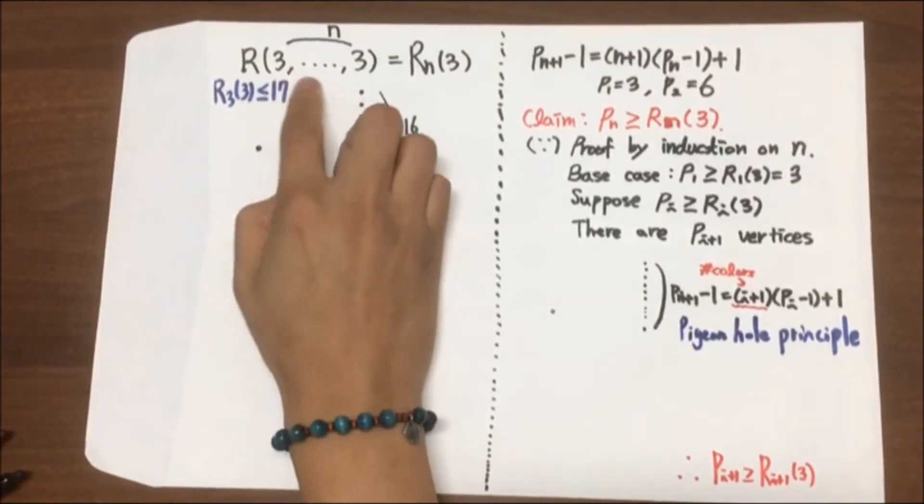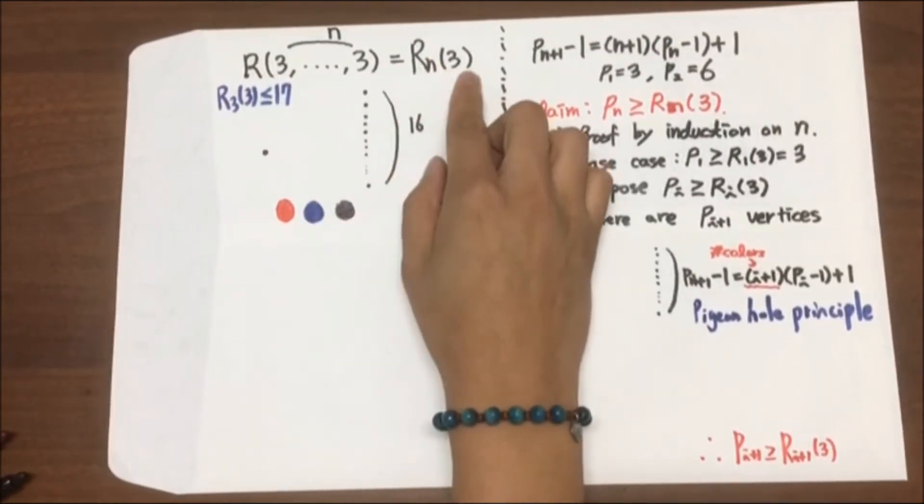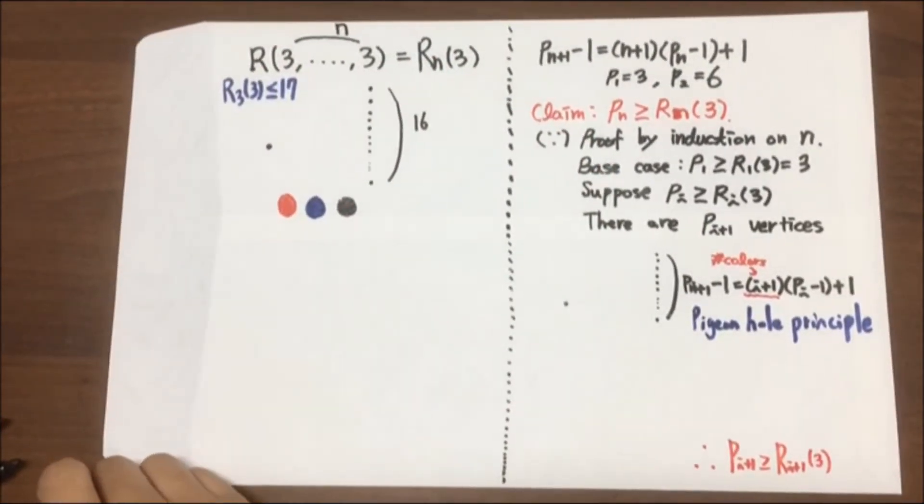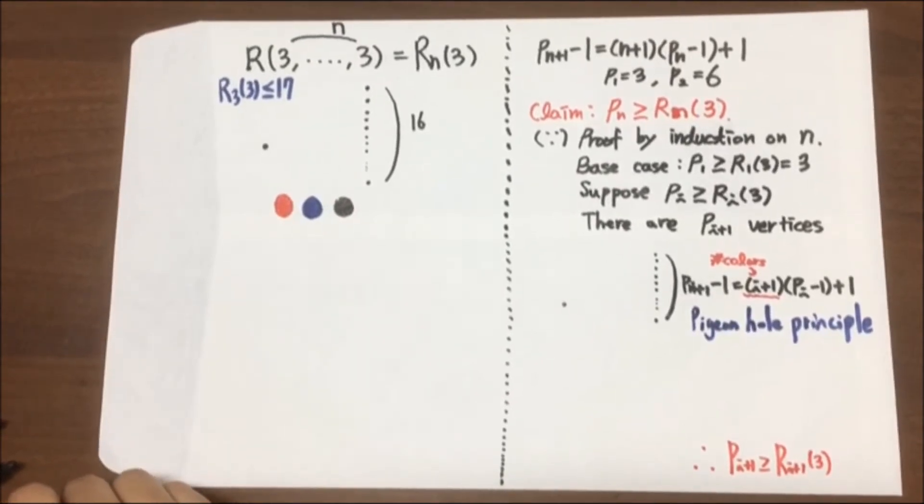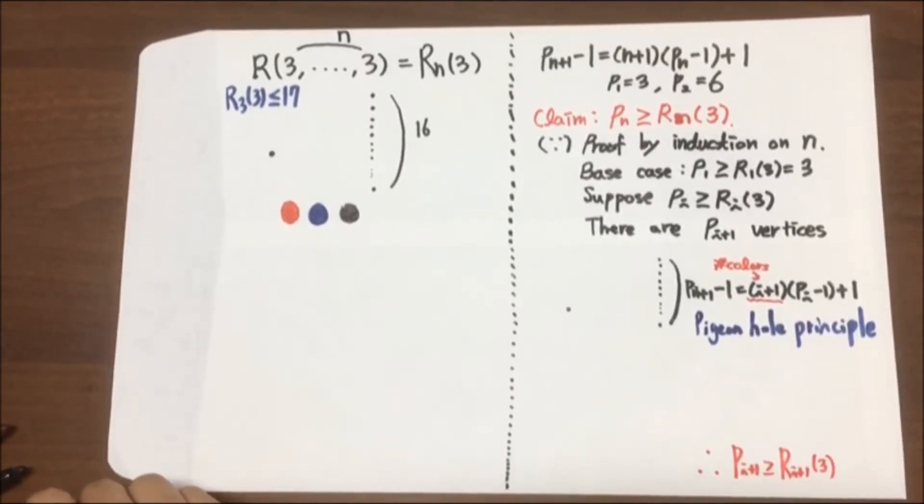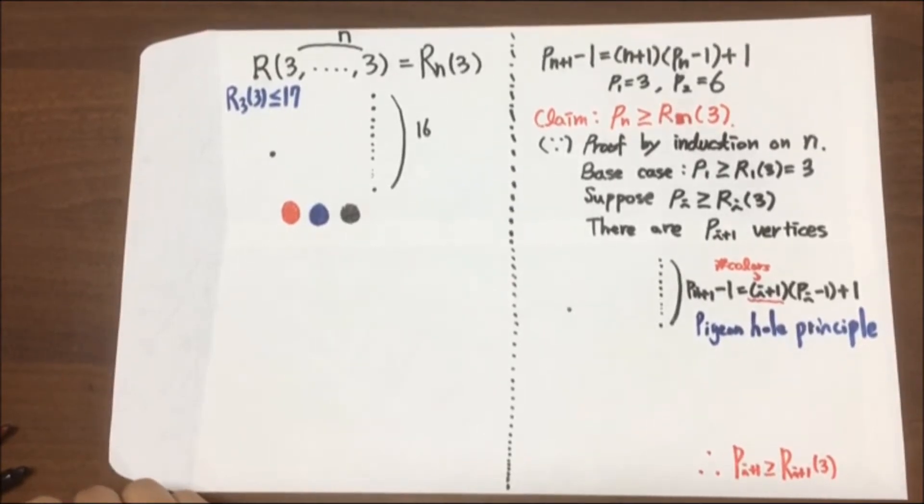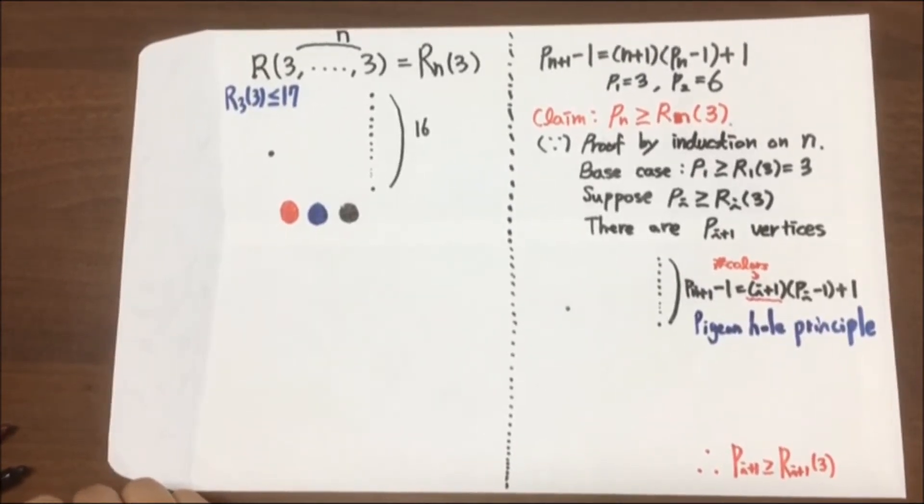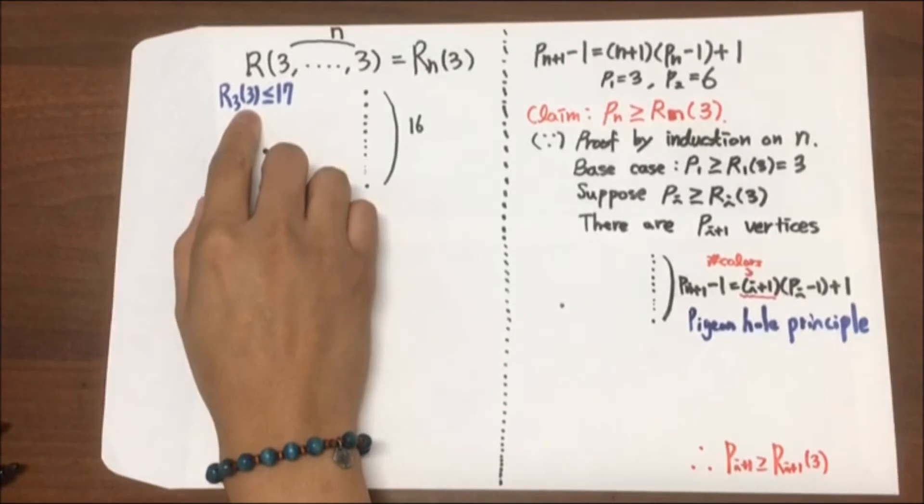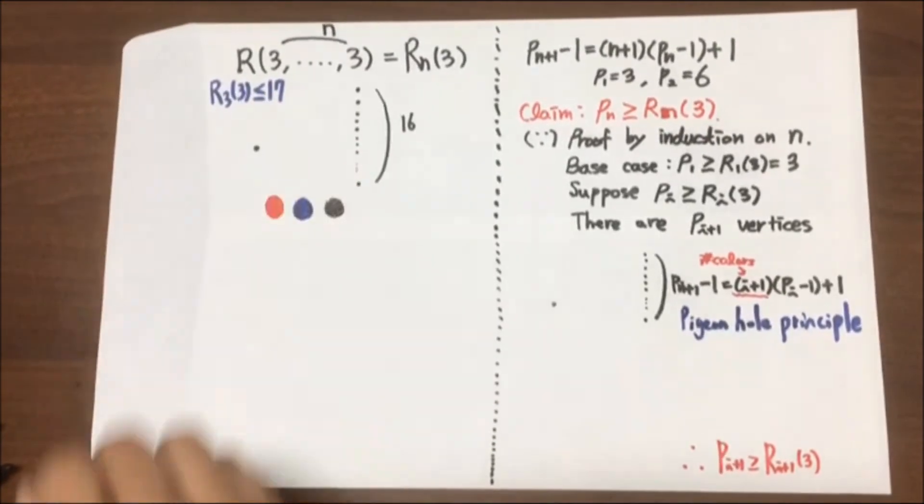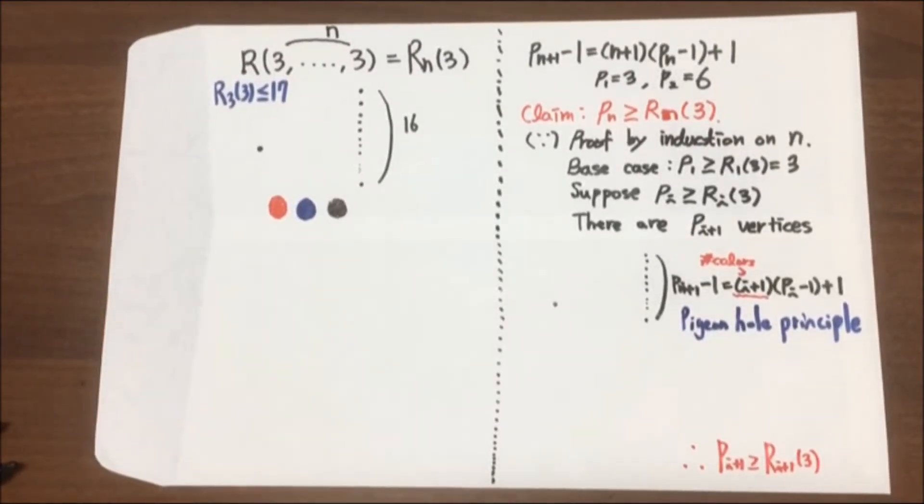So, we'll denote this number, Ramsey number by R_N(3). So, how can we get R_N(3)? We don't know the exact number, but by using recurrence relation, we can at least get the upper bound. In order to do so, first let's get that R_{N+1}(3) is less than or equal to 17 by using the fact that R_N(3) is 6.